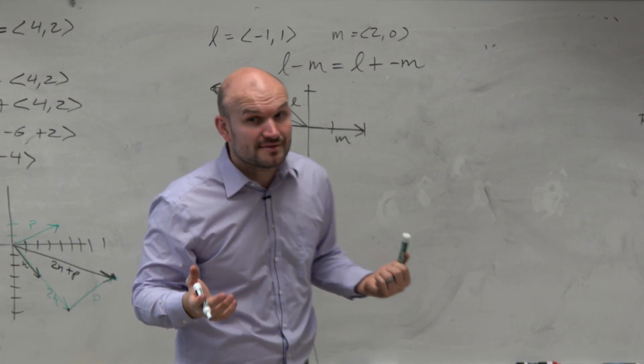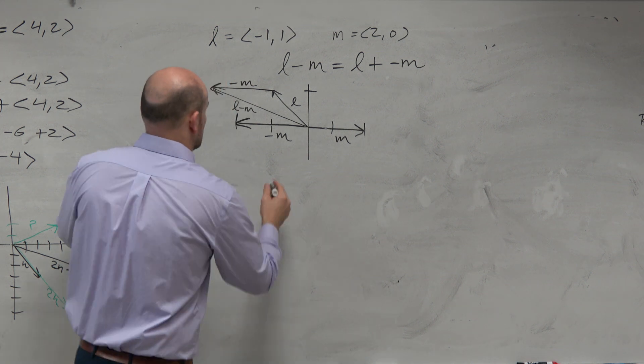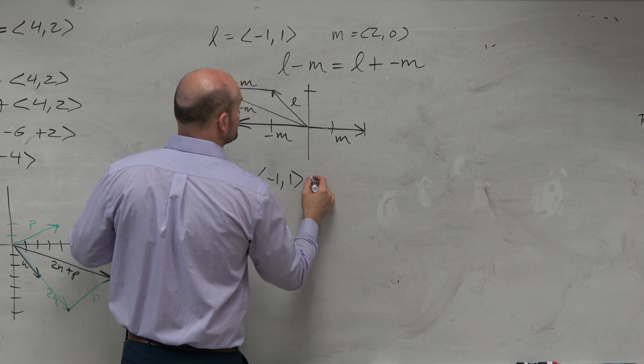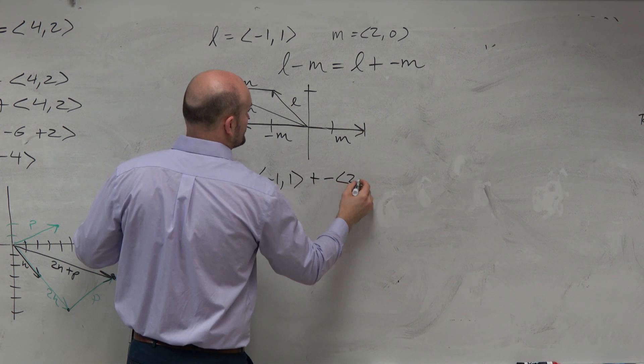So I can say that is going to be my L minus M. Now let's actually do the math and see if that is correct. So I'll do negative 1 comma 1 plus a negative 2, 0.